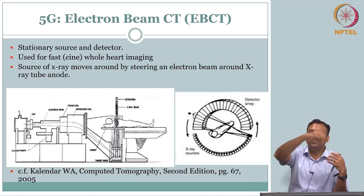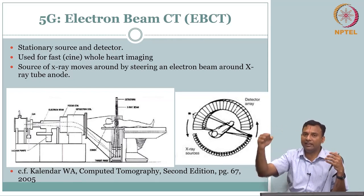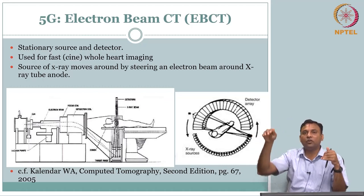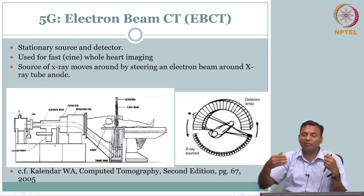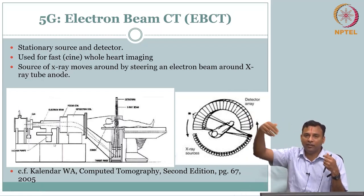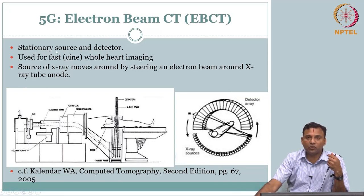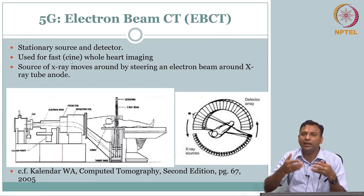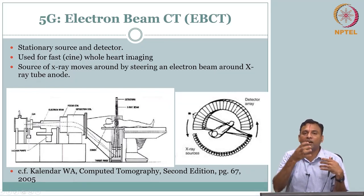Instead of just moving the thing, you say the X-ray tube manufacturing ecosystem is set — do not do that. Instead, can I just have fixed anode plates at different locations? The patient will not know anything; behind the scenes I essentially have a big setup where electrons move around and hit a particular anode where I want the X-ray view. So you had a stationary source and stationary detector. This was used for fast imaging — we call this a cine loop, like cinema, meaning you can actually get a movie — used for fast whole heart imaging.